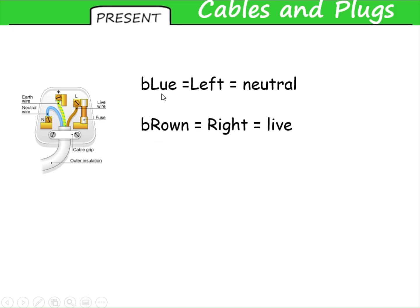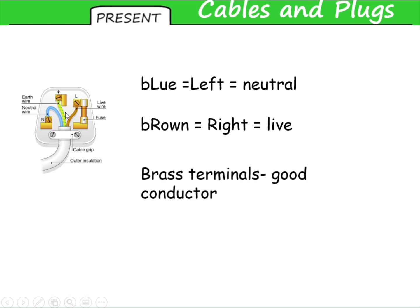Similarly, we have R in the word brown — that's the right side — and that's your live wire. And then at the top, your stripy wire, yellow and green, is your earth.